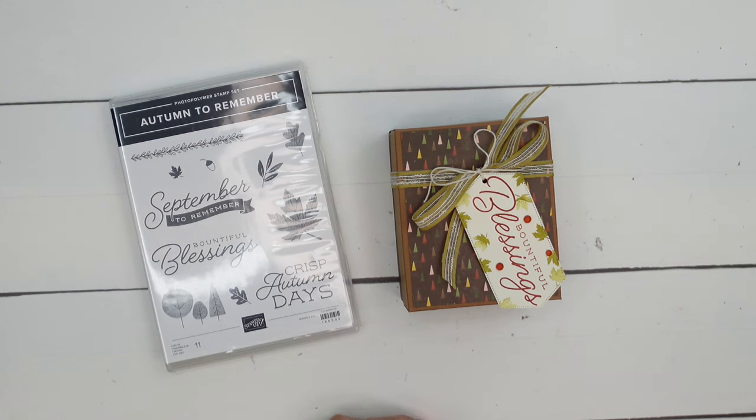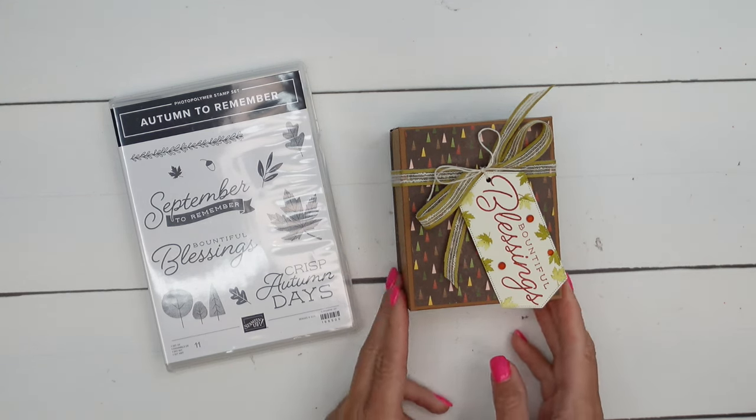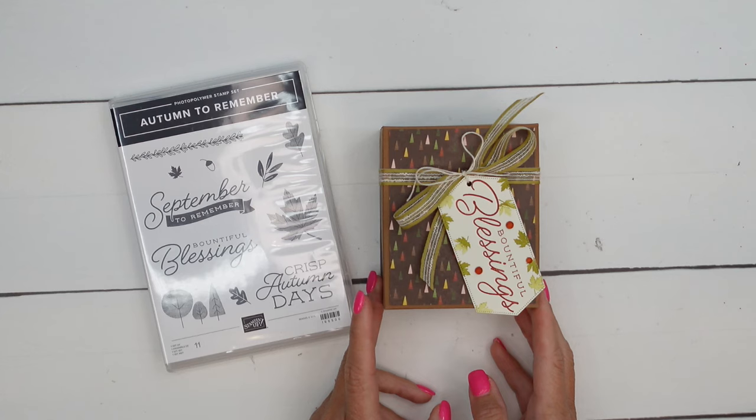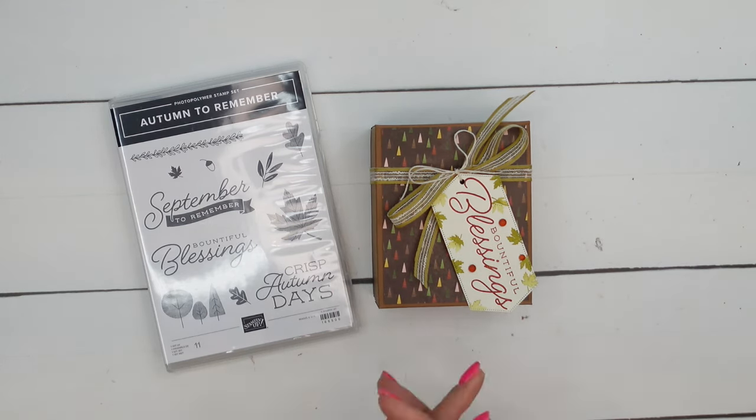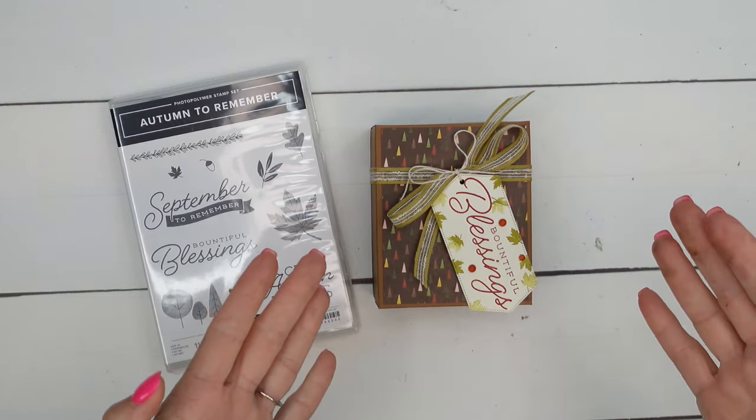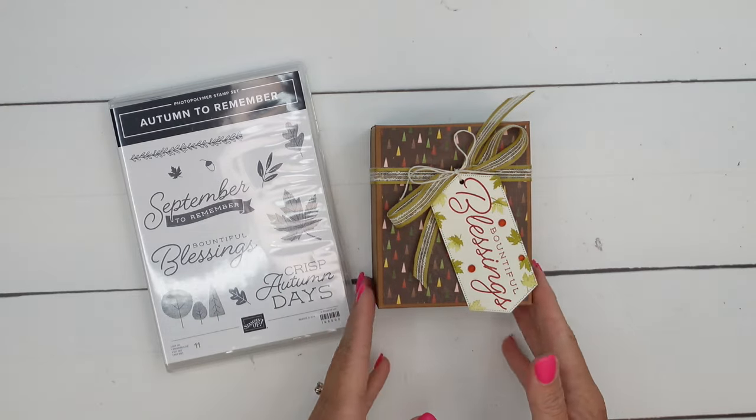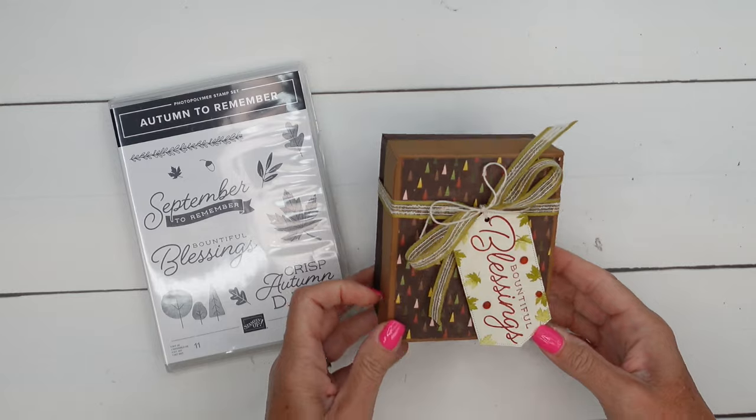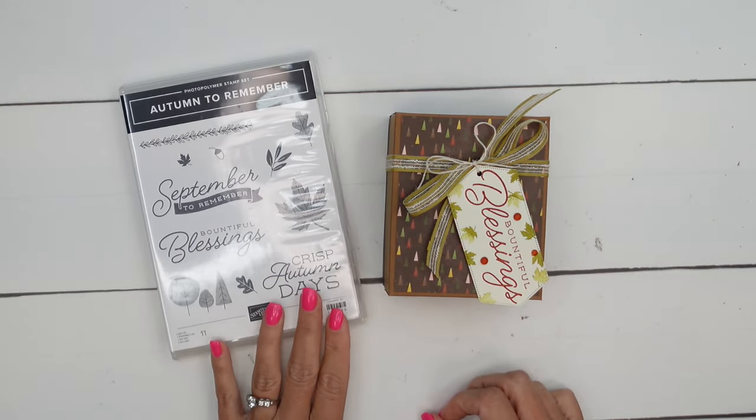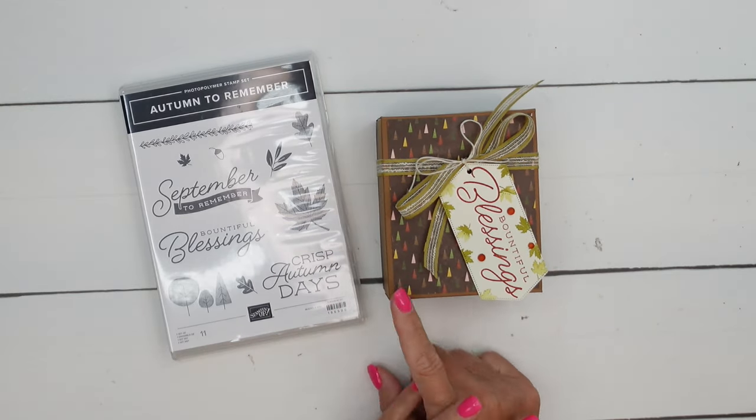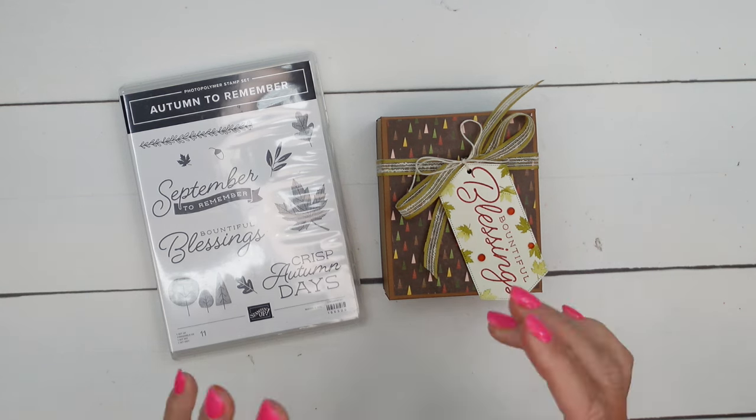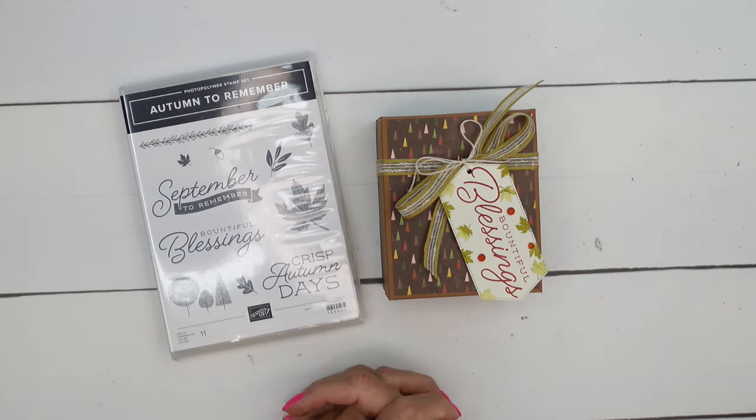Hey everybody, Erica Serwin here from Pink Buckaroo Designs and I'm going to show you how to make a box. I'm going to show you my process for making boxes so that you can make a box for anything that you have and determine the size. I'm using the new Autumn to Remember stamp set and coordinating designer series paper from the Stampin' Up! website.